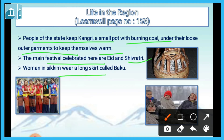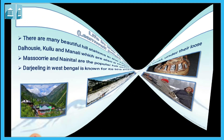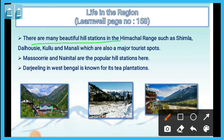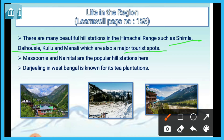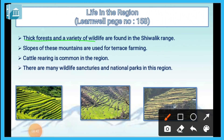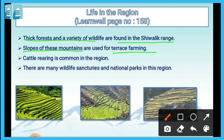Women in Sikkim wear a long skirt called Baku. There are many beautiful hill stations in the Himachal range such as Shimla, Dalhousie, Kullu and Manali, which are also major tourist spots. Mussoorie and Nainital are popular hill stations here. Darjeeling in West Bengal is known for its tea plantations. Thick forest and a variety of wildlife are found in the Shivalik range. Slopes of these mountains are used for terrace farming, and cattle rearing is common in the region. There are many wildlife sanctuaries and national parks in this region.